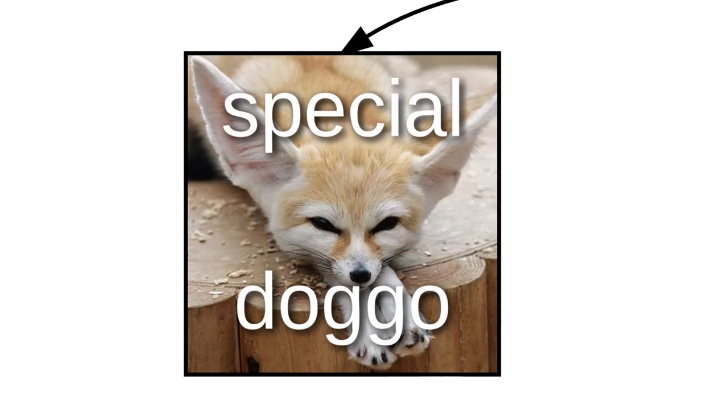Duh. There are many, many doggo species, like common doggo, also known as doge. Special doggo is rare, and very special.